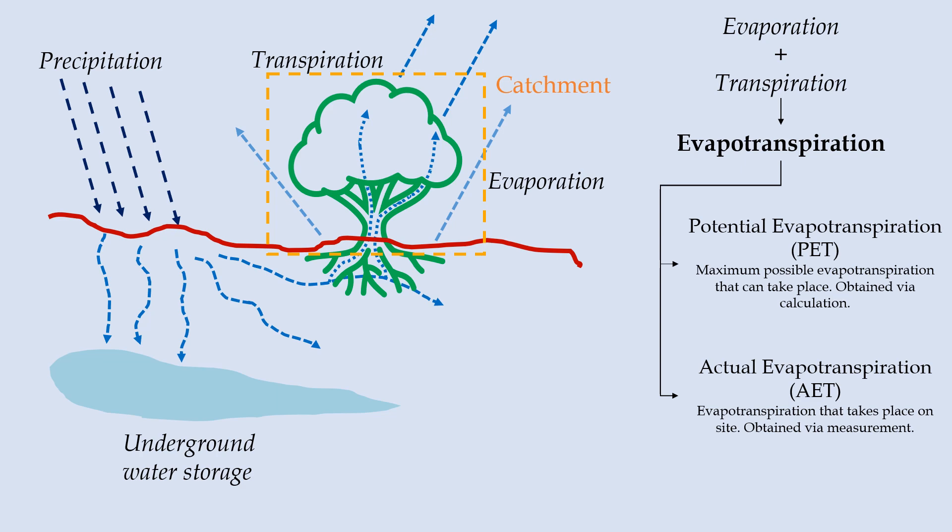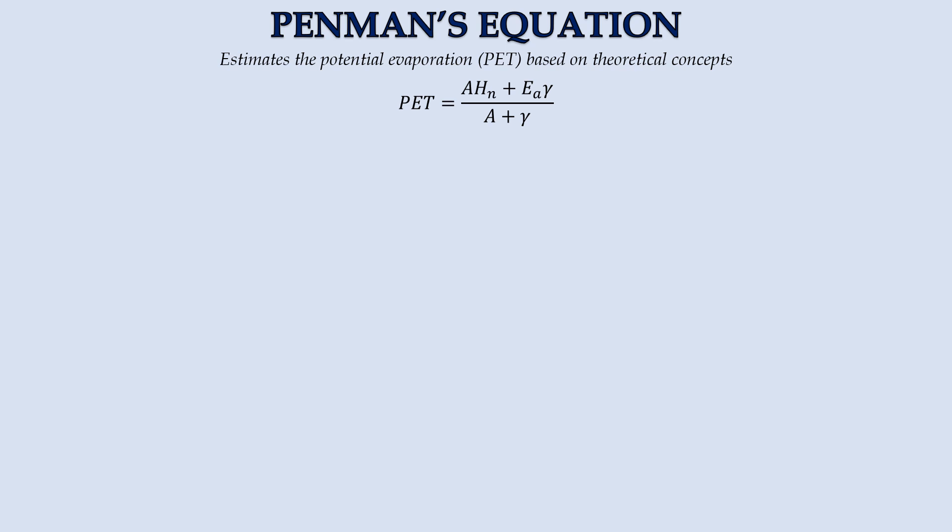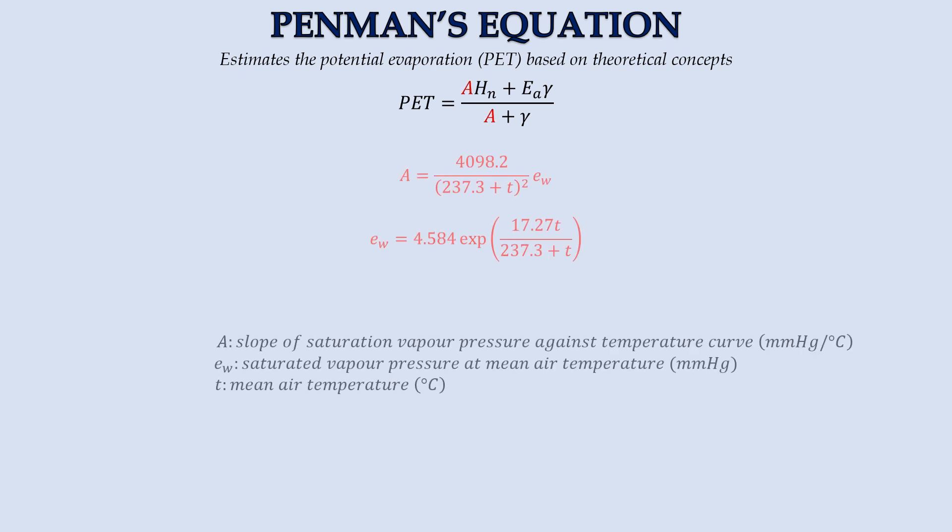It can be calculated using various equations. Penman's equation is one of the most popular equations we use to estimate the mm of potential evapotranspiration per day. In this equation, we need to determine the value of parameters A, Ea, Gamma, and Hn. A is the slope of the saturation vapor pressure against temperature curve. We may calculate it using the following equation.